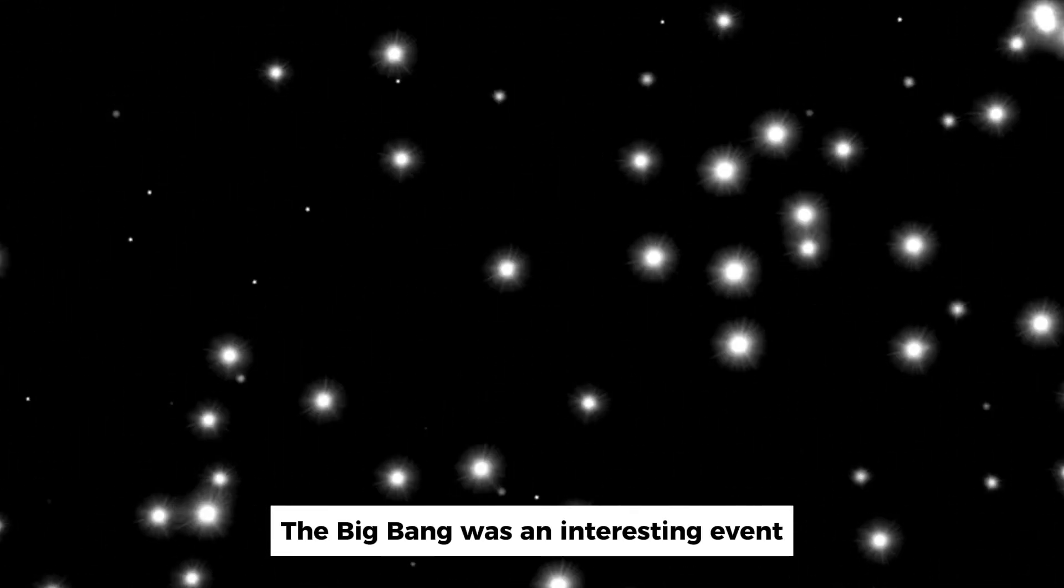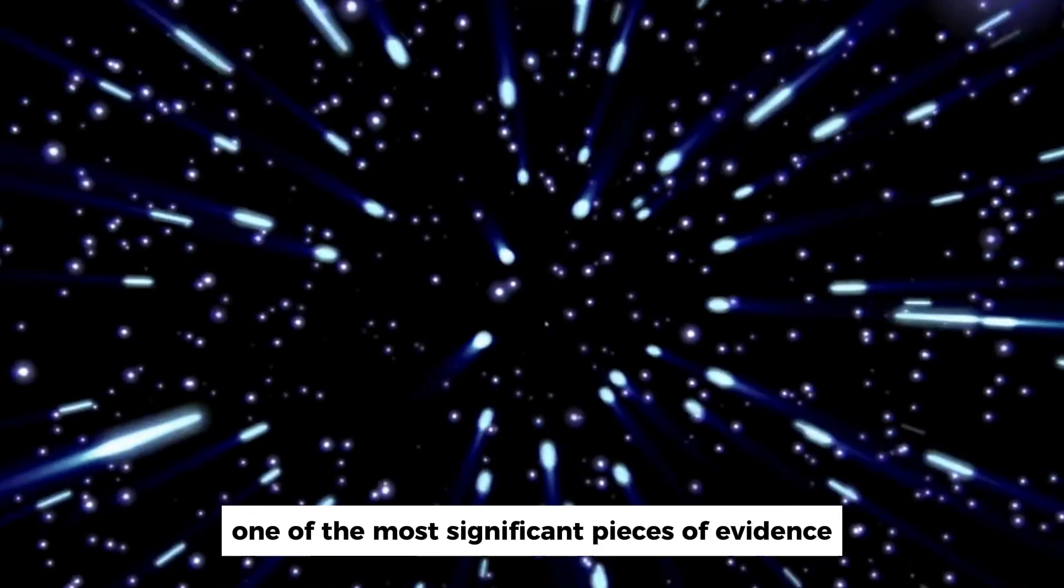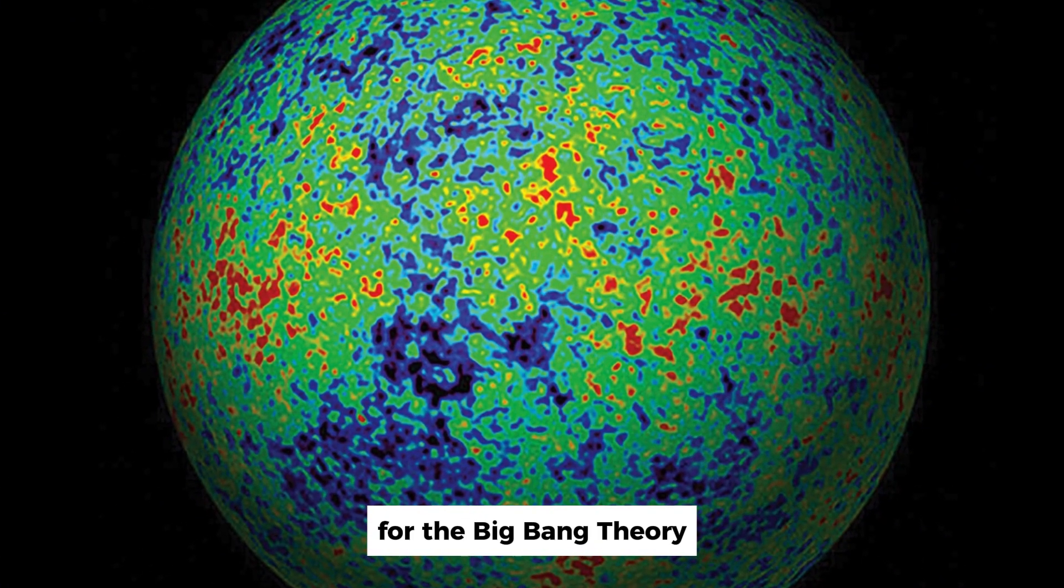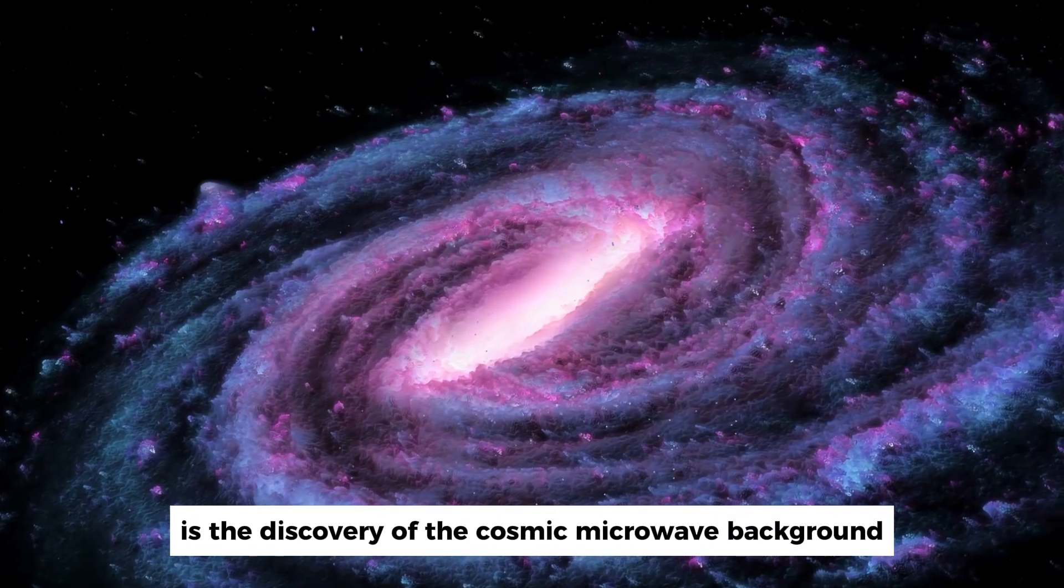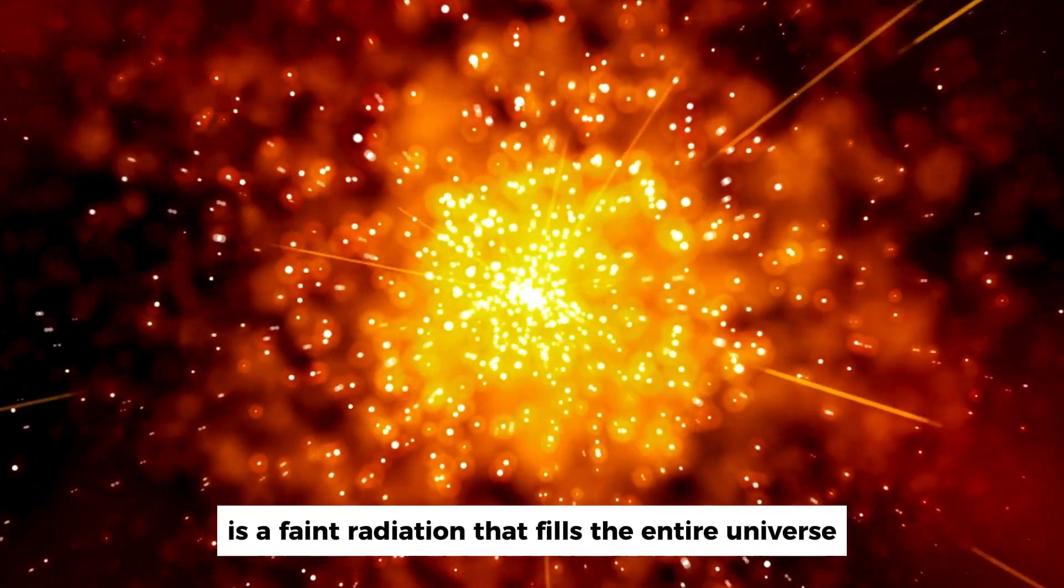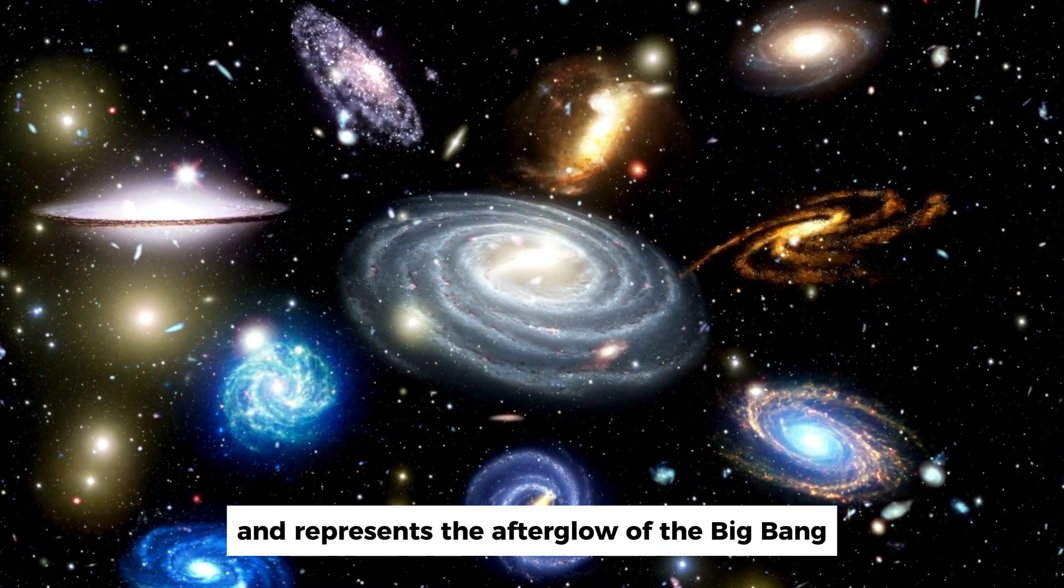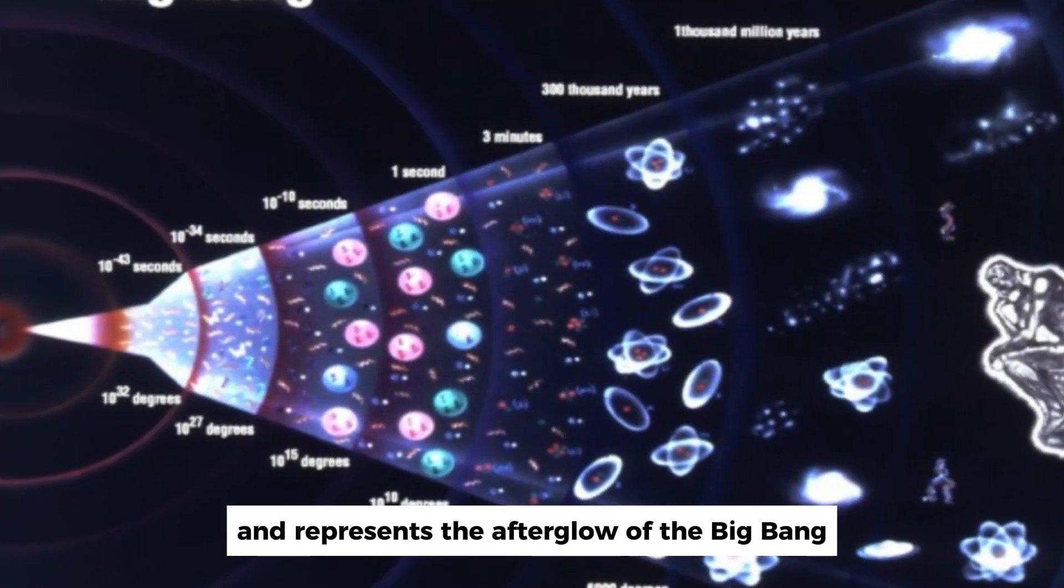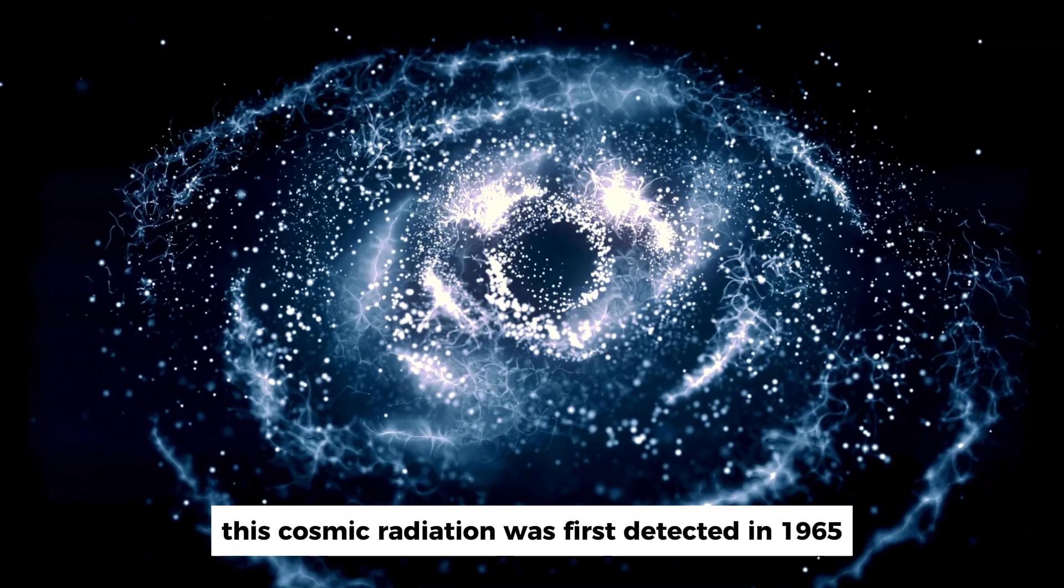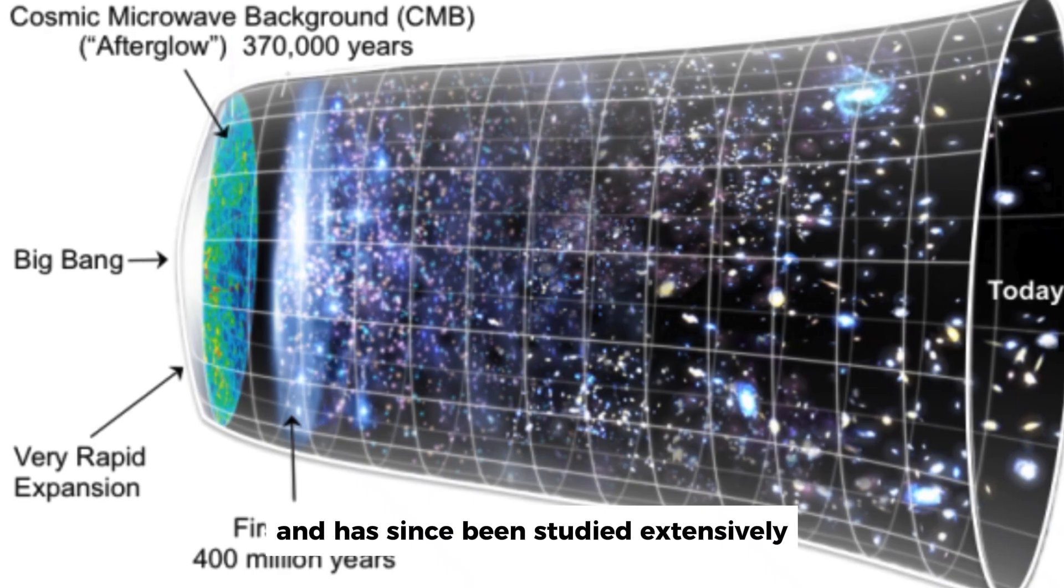One of the most significant pieces of evidence for the Big Bang theory is the discovery of the cosmic microwave background, CMB. The CMB is a faint radiation that fills the entire universe and represents the afterglow of the Big Bang. This cosmic radiation was first detected in 1965 and has since been studied extensively.